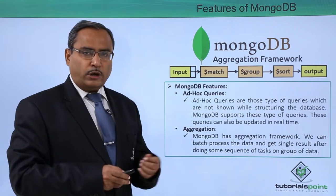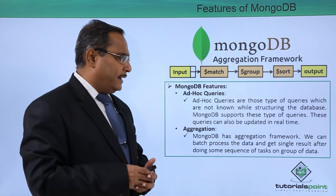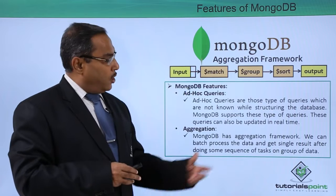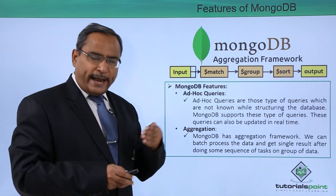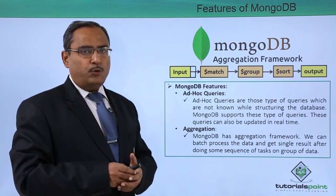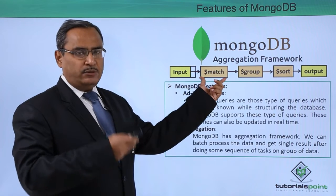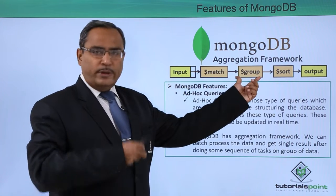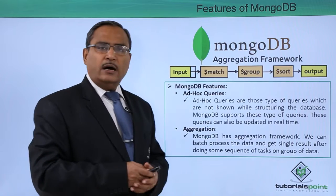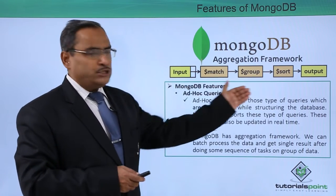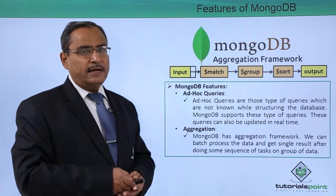The next point is aggregation, a very important feature. MongoDB has an aggregation framework where you can batch process the data and get a single result after doing a sequence of tasks on a group of data. For example, we take one input, perform match operations, searching operations, grouping operations based on attribute values, then sorting, and finally obtain the output. This is a batch operation where multiple tasks execute sequentially, which is known as the aggregation framework.